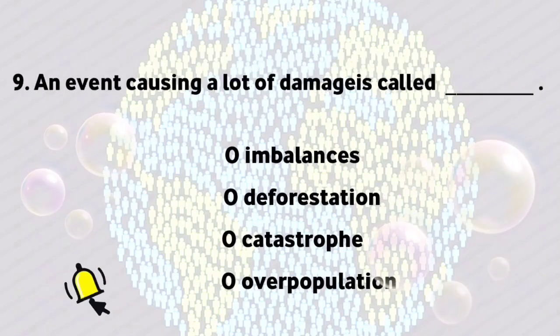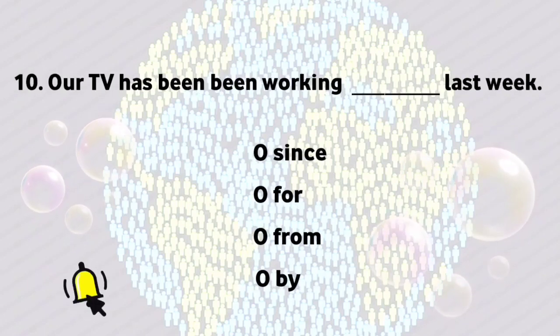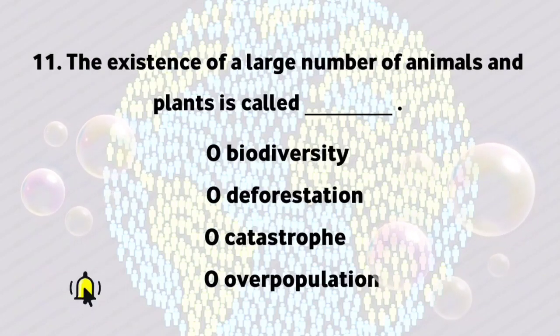An event causing a lot of damage is called catastrophe. Our TV has been working since last week. The existence of a large number of animals and plants is called biodiversity.